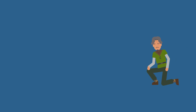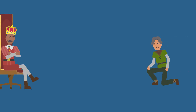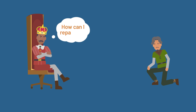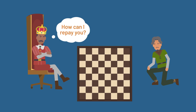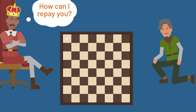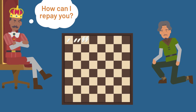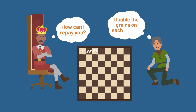Legend tells of a clever mathematician who performed a great service for his king. When asked to name his reward, he made what seemed like a modest request: place one grain of rice on the first square of a chessboard, two grains on the second, four on the third, and simply double the grains on each square until the board is full.